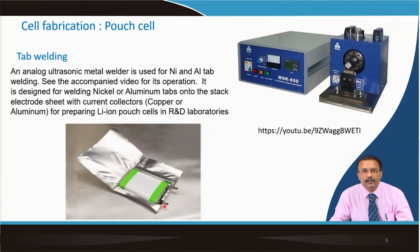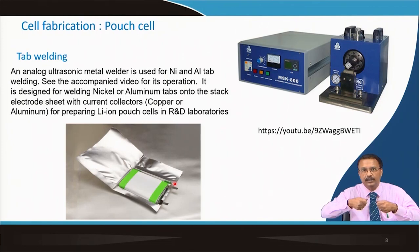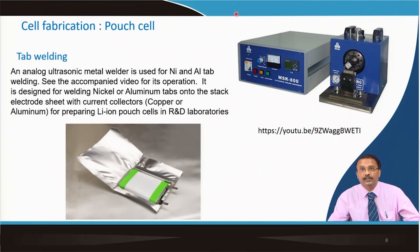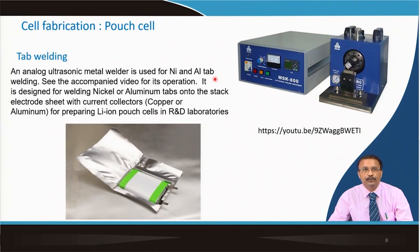In tab welding, you can imagine there are a number of nickel and copper tabs coming from each electrode. Everything should be sealed together along with another tab that gets the connection from these multiple tabs. This machine — the tab welding machine — is an ultrasonic metal welder used for nickel and aluminium tab welding; copper can also be used. It is designed for welding nickel or aluminium tabs onto the stack electrode sheet with current collectors of copper or aluminium, and that basically prepares the pouch cell.